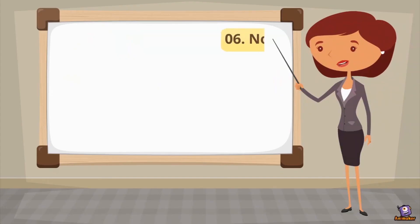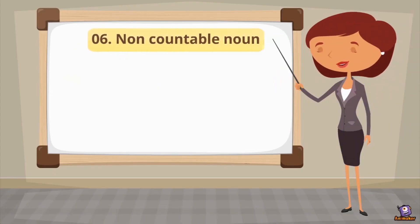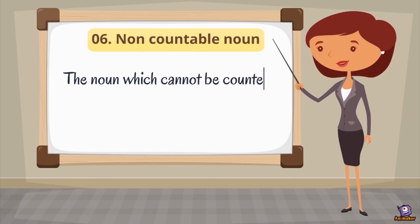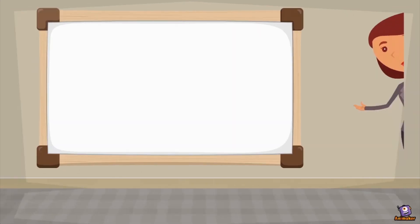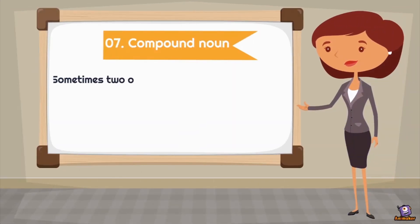Then we have non-countable noun — the noun which cannot be counted. Aapko naam se samajh mein aa raha hoga ki woh aisa noun hota hai jo hum count nahi kar sakte. Example: oil, water, sugar. Kya hum oil ko count kar sakte hain? Nahi. Kya hum water ko count kar sakte hain? Nahi. So jo bhi cheezein hum count nahi kar sakte, they are known as uncountable or non-countable nouns.